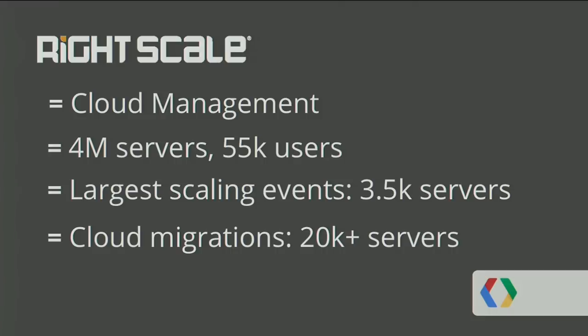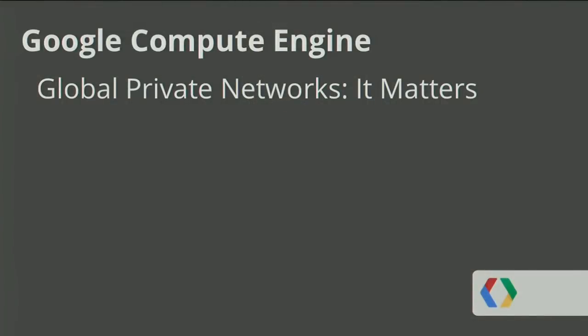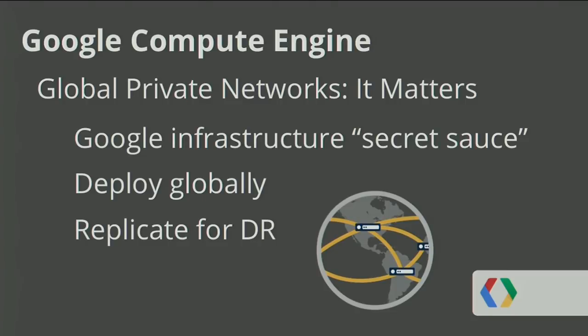I'd like to highlight three things we think are really special about Google Compute Engine. The first is the global private network Google is offering. Google's infrastructure is a key part of the secret sauce of the company, and it's amazing that they're opening that up on an as-you-go basis. This global private network really enables global deployment much more easily — you've got what looks like a private network spanning the globe — and it makes replication, disaster recovery, and failure isolation strategies much, much easier.